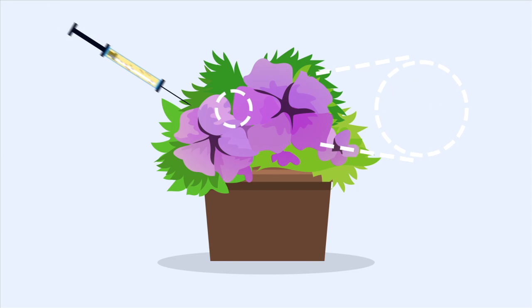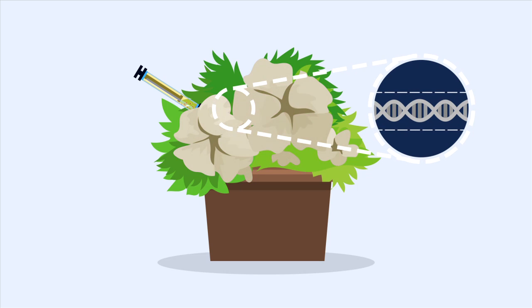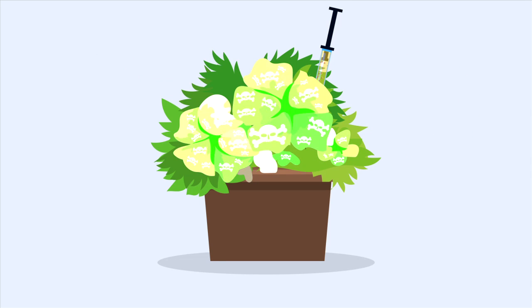For example, turning off one gene may drain all of the pigment out of a purple flower. Another might prevent a plant from producing a toxic chemical, making it safe to eat.